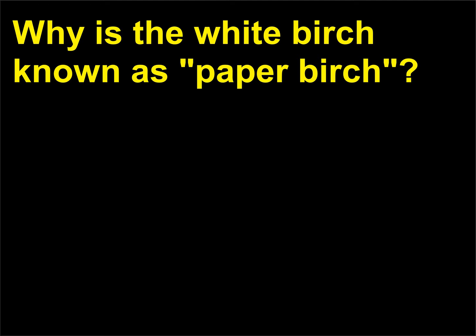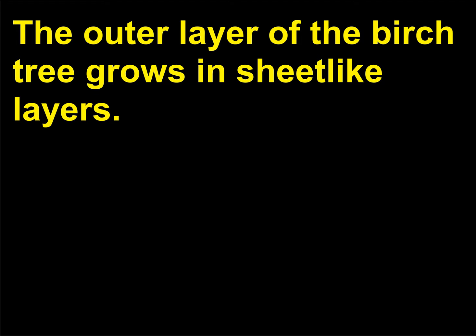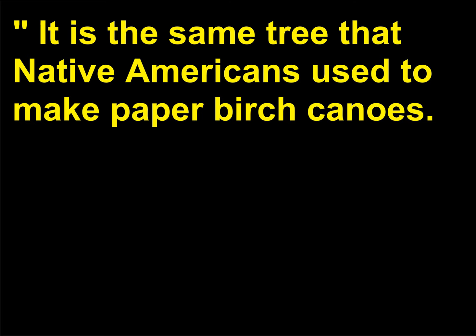Why is the white birch known as paper birch? The outer layer of the birch tree grows in sheet-like layers, hence it has been known as paper birch. It is the same tree that Native Americans used to make paper birch canoes.